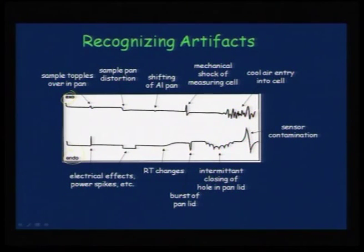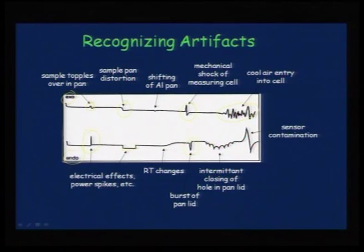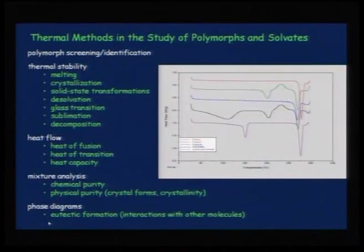Baseline shifts are very mild, so care is needed while analyzing them. Any ups and downs in the DSC curve do not always mean something real is happening — several artifacts can be recognized. In the exo-peak, if the sample topples over in the pan, or the sample pan is distorted, or there is mechanical shock to the measuring cell, or air flow leaks, you see fluctuation noise. In the endo-peak, electrical spikes or pan lid burst can appear as artifacts.